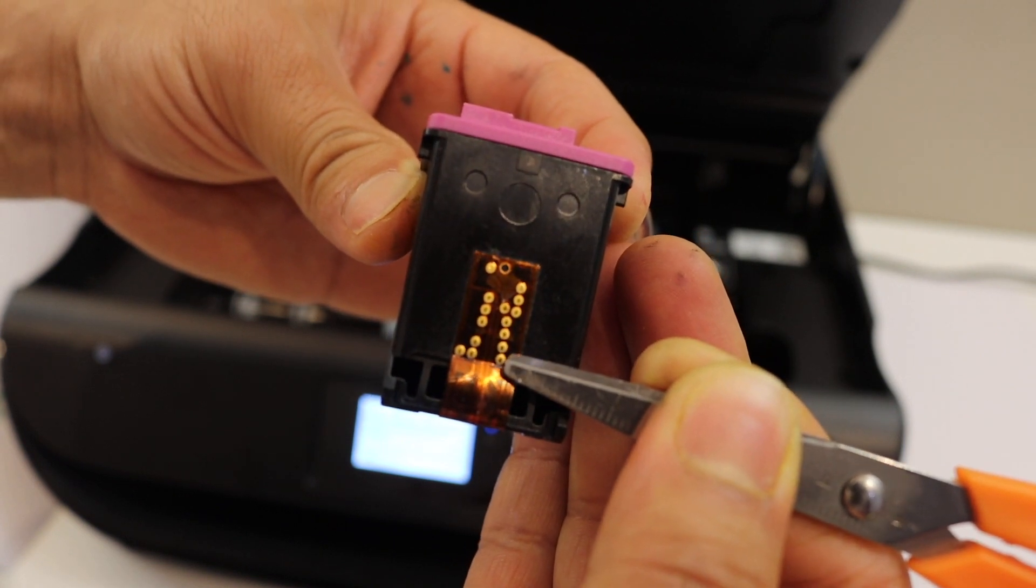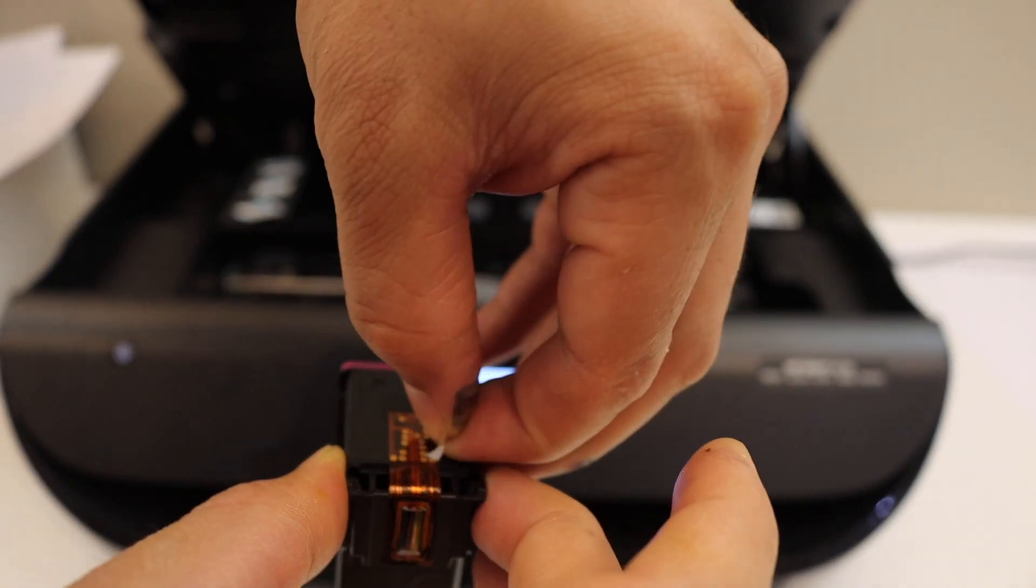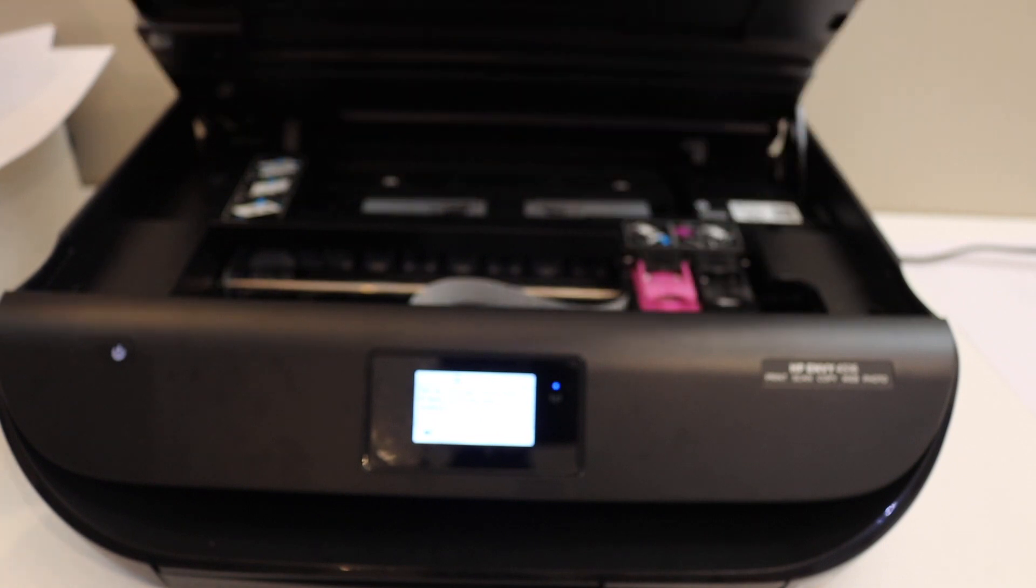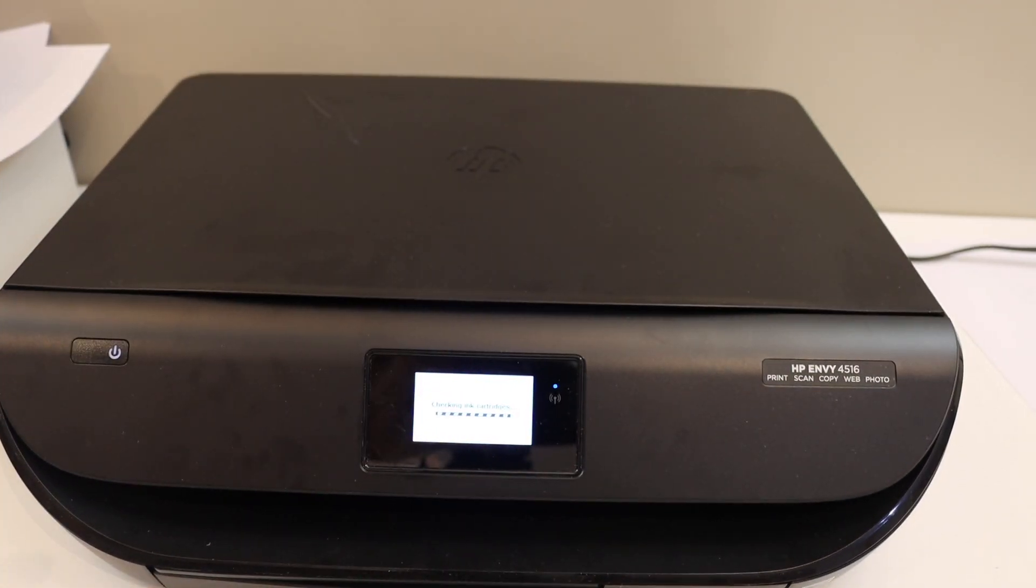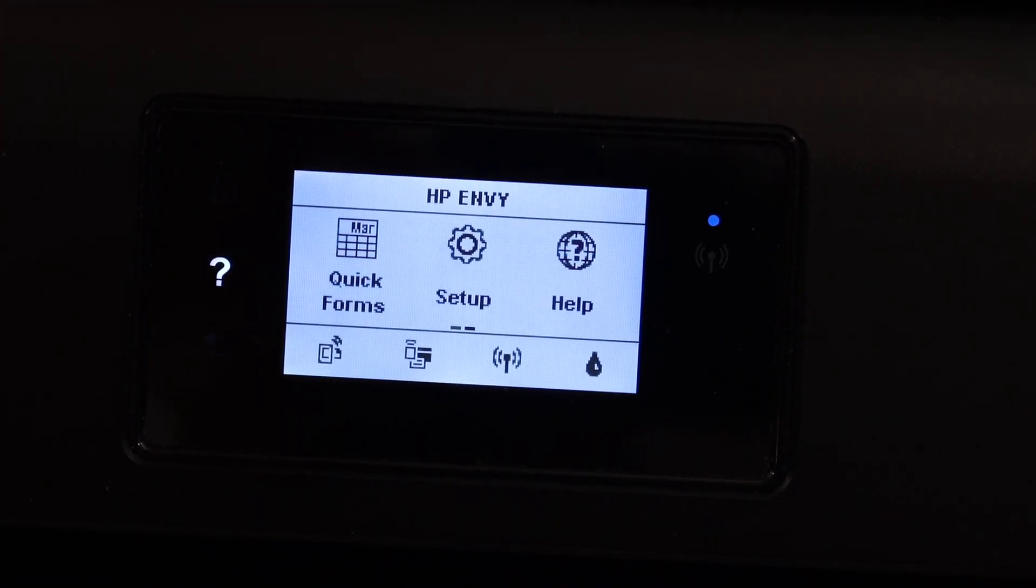Put a small piece of tape on this section. Now install it and close the ink cartridge chamber door and wait for the printer to read.